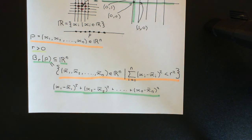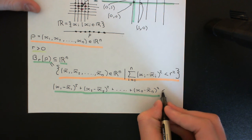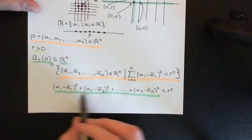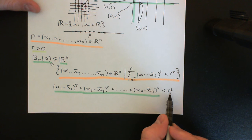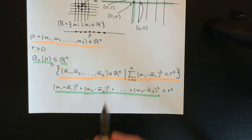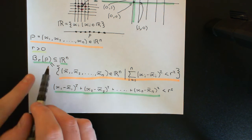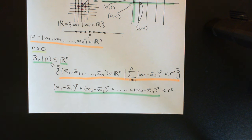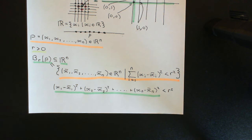Then comes another property of the real numbers that we're going to require, which is the ordering property, because we're then going to say we want this to be less than R squared. So you work out this number in the real numbers, and if it's less than R squared, then you will put this point x1 bar, x2 bar, all the way up to xn bar into the ball of radius R around this point P. The definition of a ball doesn't require any vector space structure or geometrical structure — all it requires is that we understand something about the real numbers.